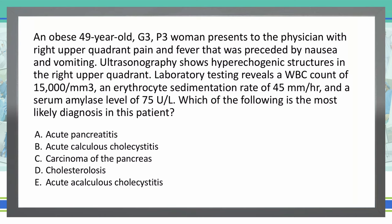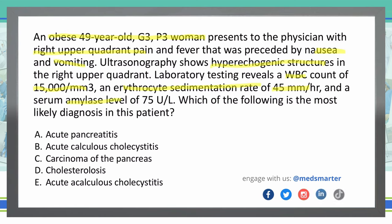We start out with an obese 49-year-old G3P3 female having right upper quadrant pain with nausea and vomiting. On ultrasound, she had hyperechoic structures in the upper quadrant. White blood cell count is 15,000, ESR is 45, and amylase is 75.